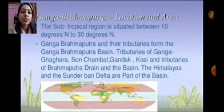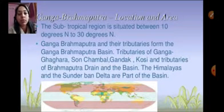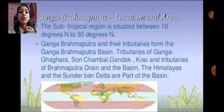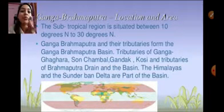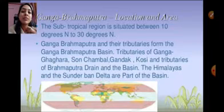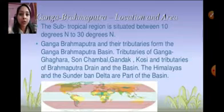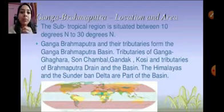Ganga, Brahmaputra, and their tributaries form the Ganga-Brahmaputra basin. Just like the Amazon river is joined by 1000 tributaries, the same is with the Ganga-Brahmaputra. Ganga is coming from one side and Brahmaputra from another side, and they join so many tributaries which creates the Ganga-Brahmaputra basin.